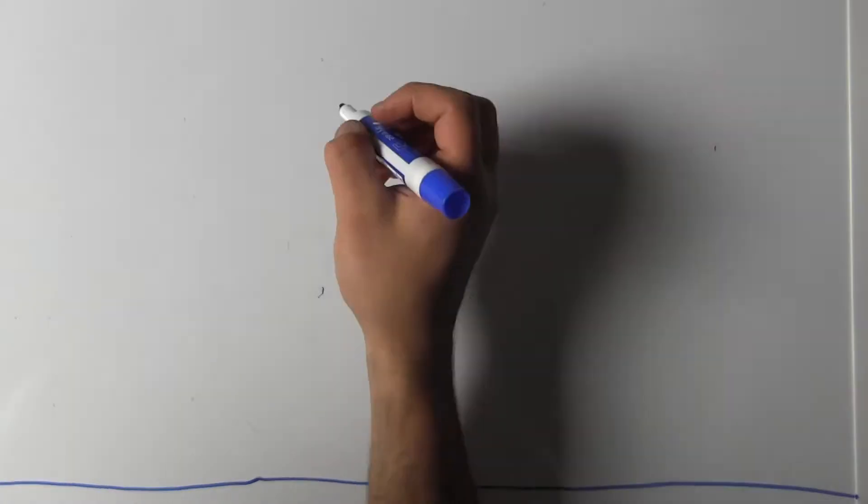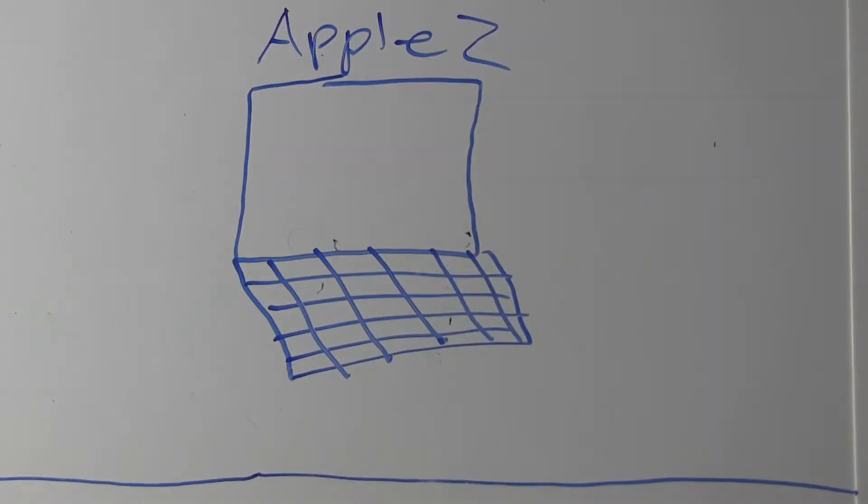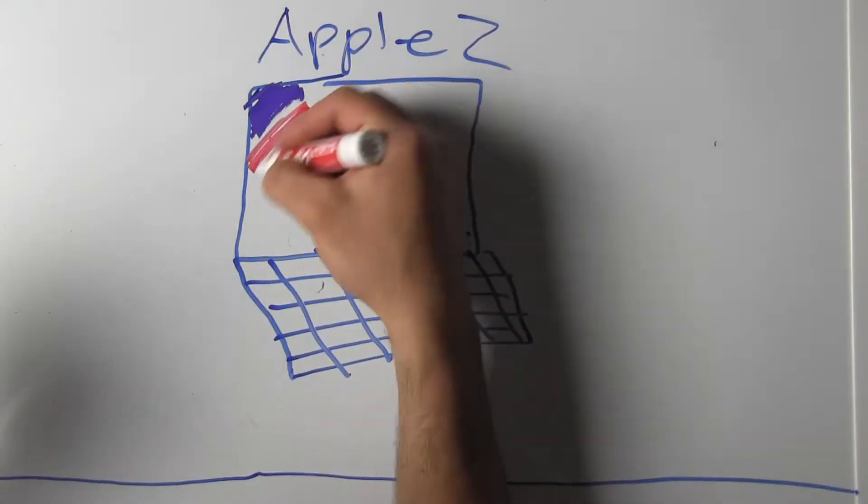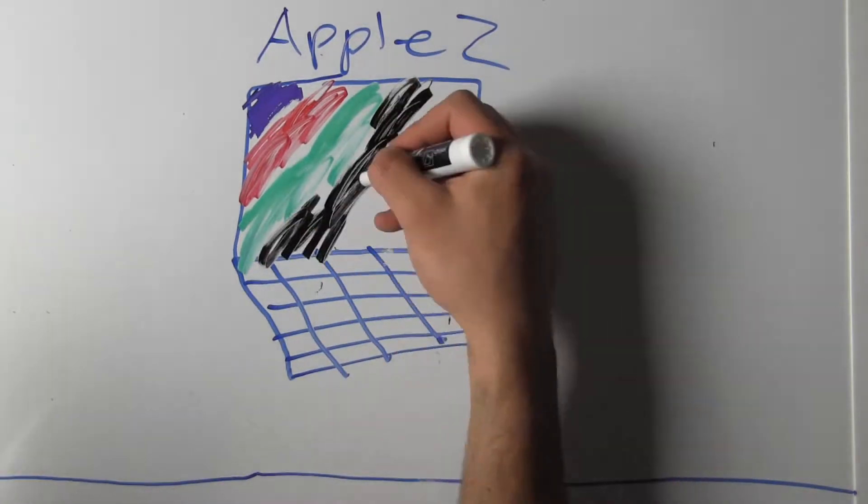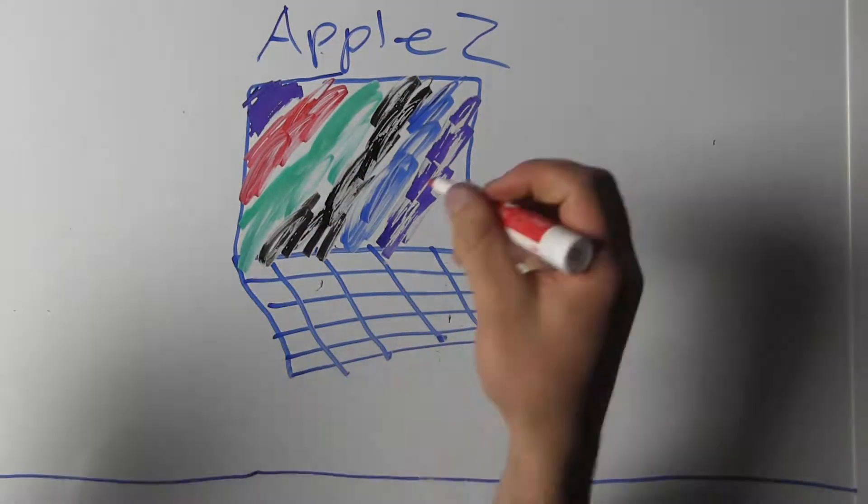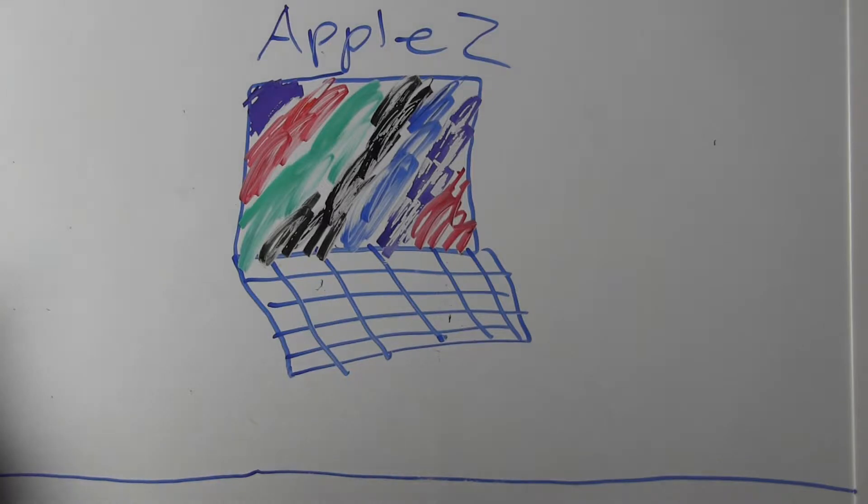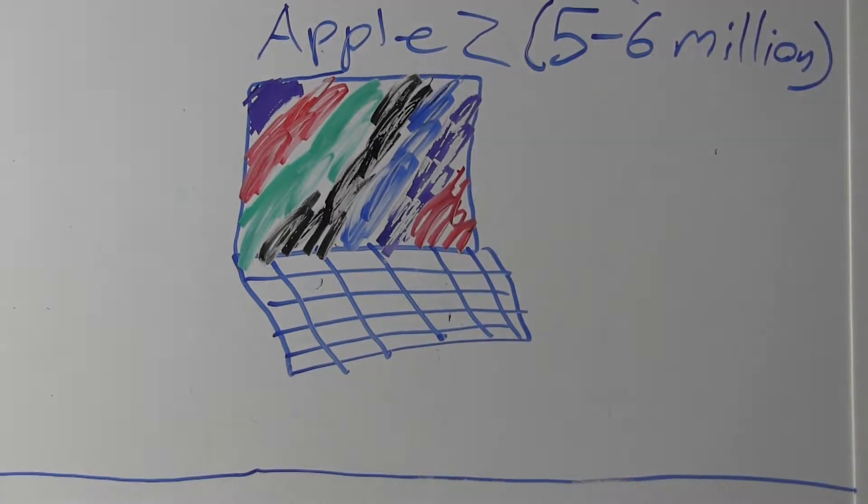After the Apple One came out, they released the Apple Two, which was an upgrade of the Apple One including many features including first-ever color graphics on a computer. This computer sold way better than the Apple One, selling five to six million devices.